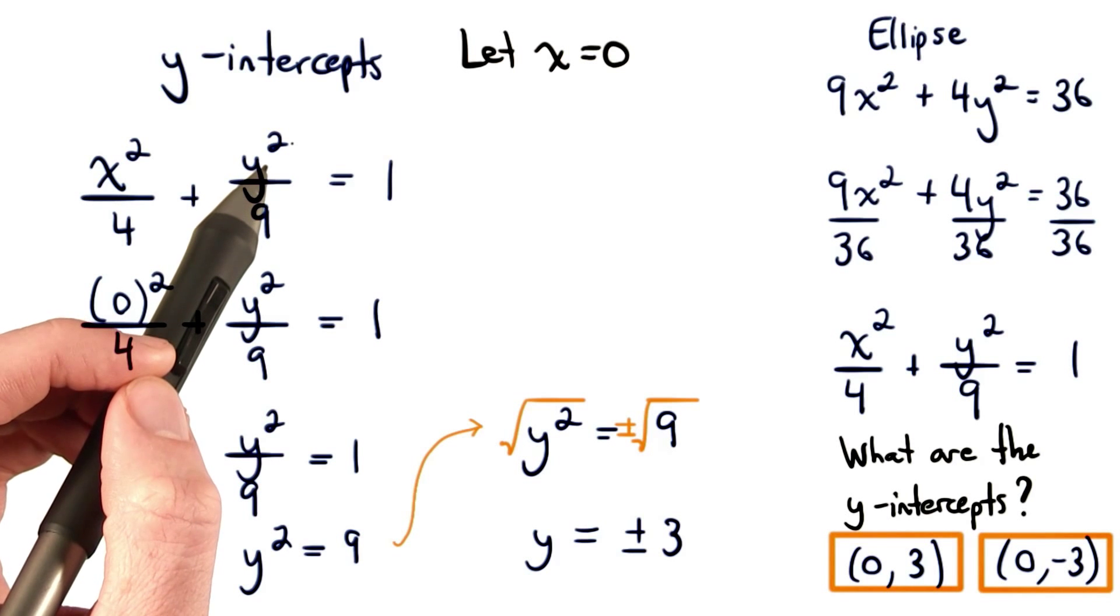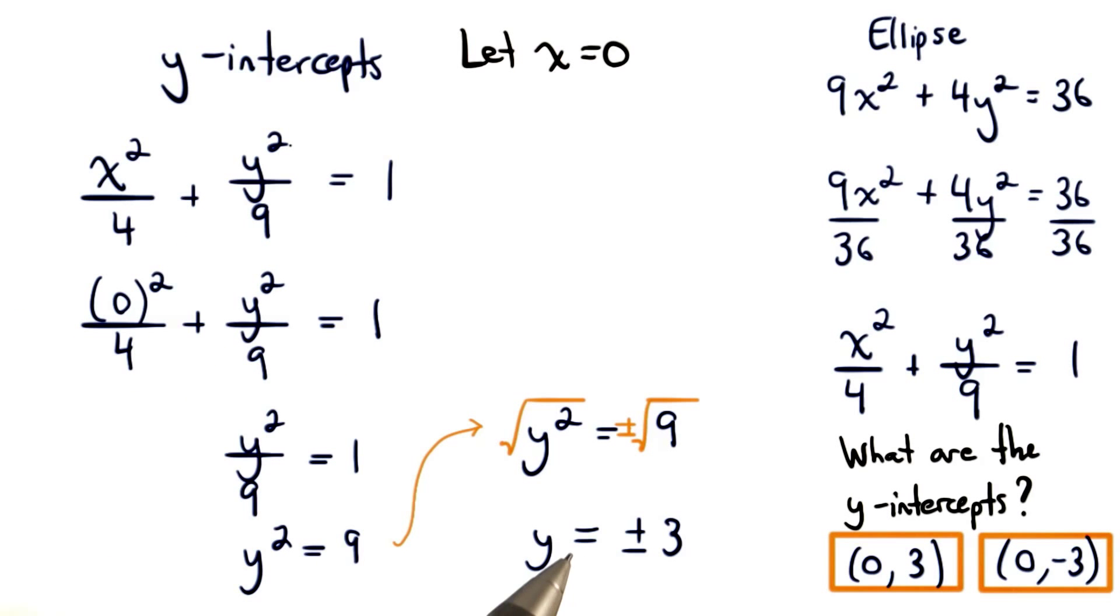Notice that we had a y squared term here. This led us to have two solutions for y. We'll have positive 3 and negative 3.